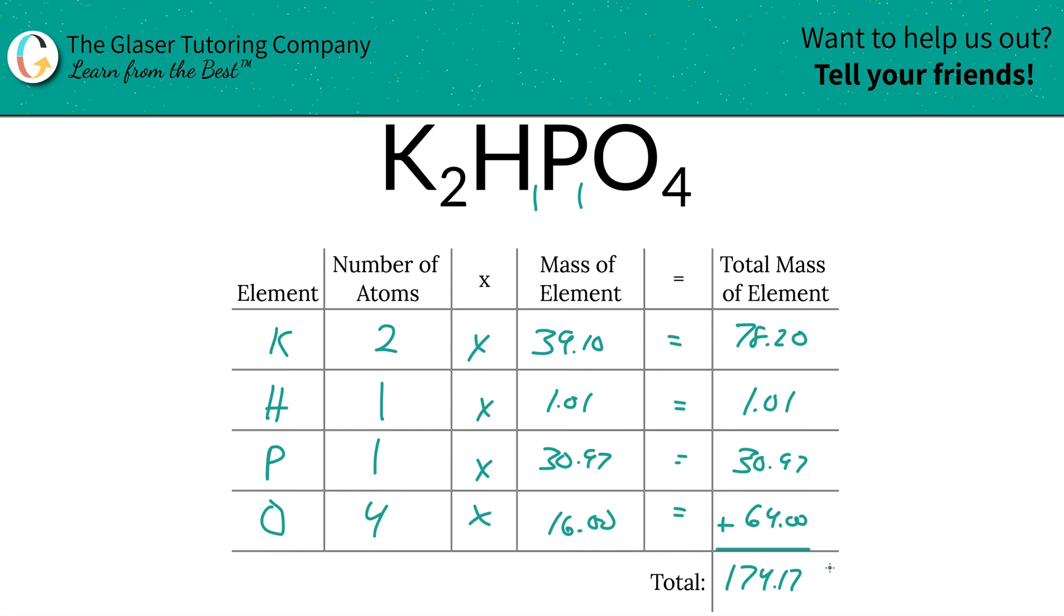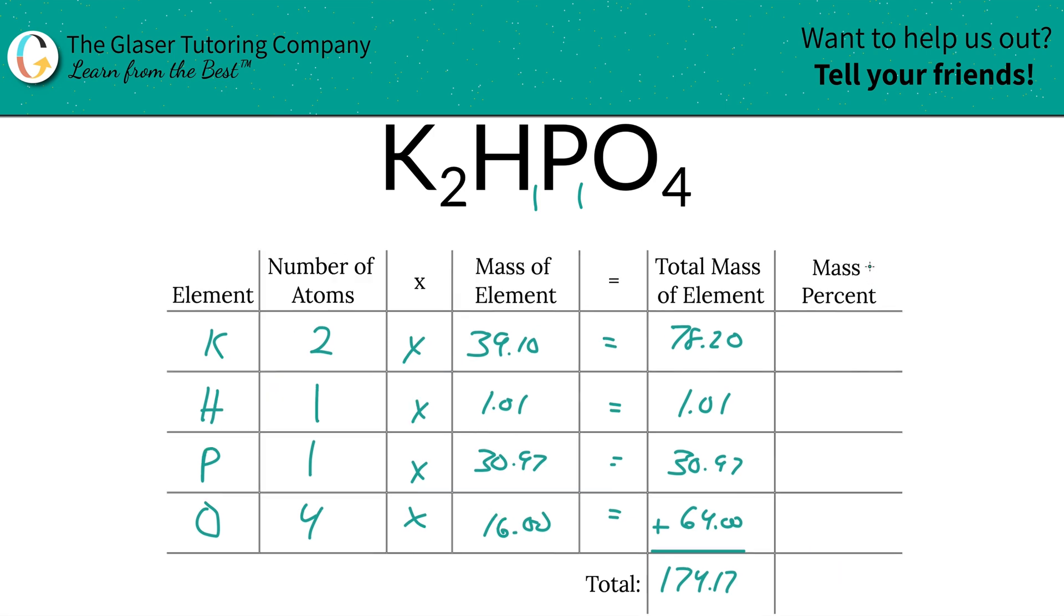I'm going to add a column to the table to finish it out. To find the mass percent or percent composition of a particular element, we're going to take the total mass of that element. For potassium it would be 78.20 and simply divide it by the entire mass of the compound, 174.17, multiply that by 100. This is a simple percent, part over whole times 100. When we do that calculation, it should work out to be about 44.90 considering the rounding.